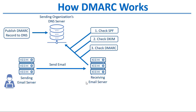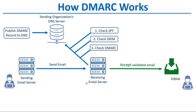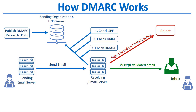Finally, the receiving server — in this case Security Gateway — checks the sending domain's DMARC record for further instructions on what to do with messages that do not properly align with SPF and DKIM. If the message passes SPF and DKIM, the message can be delivered to the recipient. If the message fails one or both SPF and DKIM, then based on the sending domain's DMARC policy, the message can be rejected or quarantined.